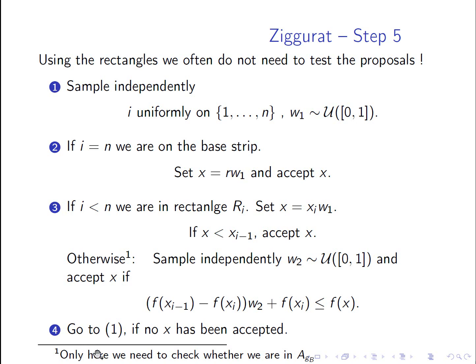And otherwise, and this otherwise is the only place here where we need to check whether we are in A_GB via an accept-rejection procedure. So here's the only place where we need the second coordinate. So otherwise, we sample independently W2. And W2 is, again, uniformly distributed on 01. And here's a test. So we accept X if this condition here is fulfilled. And this condition is Y less than or equal than F of X. This is Y. And more details for this are again given in the supplemental part. Okay, but that is it. And we start again if no X has been accepted.